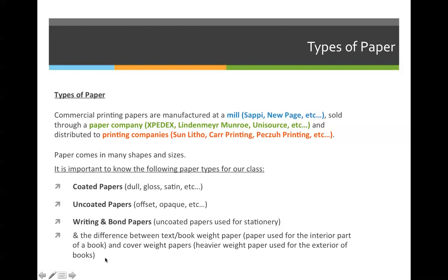Last but not least, you must know the difference between text or book weight paper and cover weight paper stocks. You don't have to be able to identify it physically — you just have to know there's a difference. A text or book weight paper stock is a thinner stock meant to go on the inside of a book. Cover weight stocks are thicker, denser stocks that don't fold as easily — they'll snap along the fold — and are used for the exterior of books. You need to know this distinction because when you find the basic size of paper from a list, there are different options depending on whether it's text weight or cover weight.